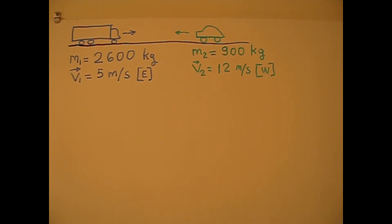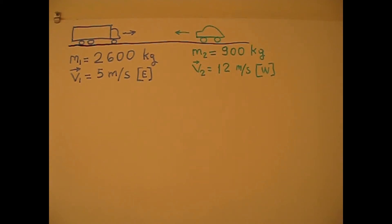Before starting the calculation, I would like to give brief information on collisions. Since these two vehicles stick together after the collision, they move with the same velocity. This kind of collision is called completely inelastic collision. In completely inelastic collision, colliding objects stick together after the collision. But there is also inelastic collision — just inelastic collision. In this case, colliding objects do not stick together after the collision; they move separately.